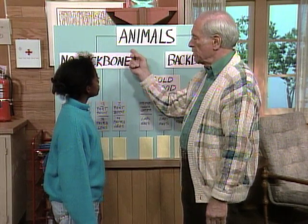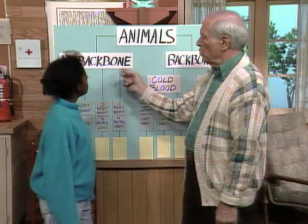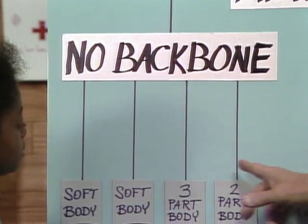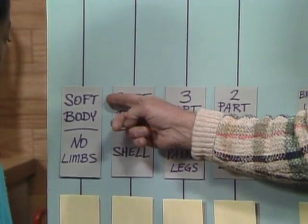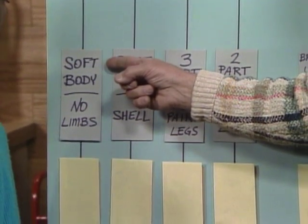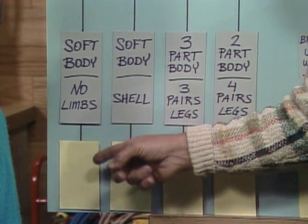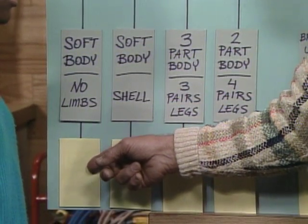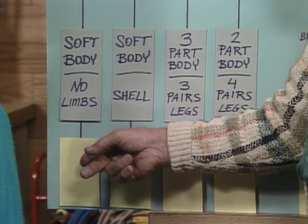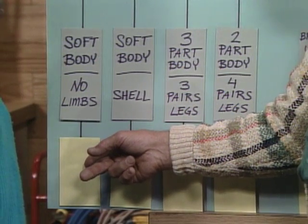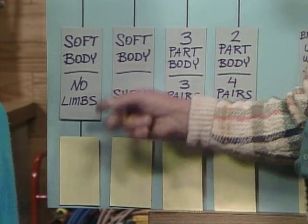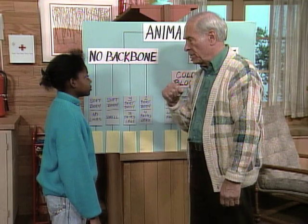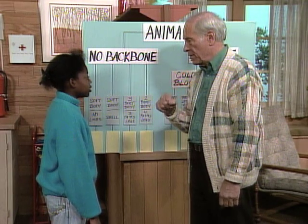For example, they're all animals and there's a whole group. No backbone. Then there are four here now that have different characteristics. In this first case: soft body and no limbs. Underneath that yellow piece of paper is a picture and the words that identify the animal. But you can't reveal it until after you've actually identified the animal live here today. Okay? Are you ready?